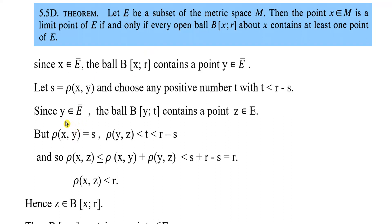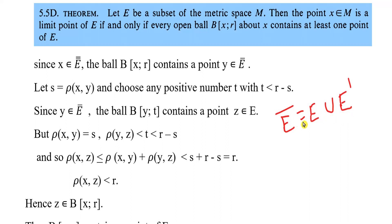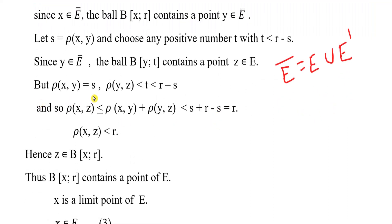Since y belongs to Ē, by theorem 5.5D, B(y, t) contains at least one point z of E. Here ρ(x, y) = s and ρ(y, z) < t, and t < r minus s.